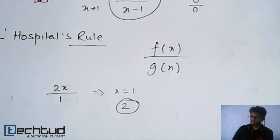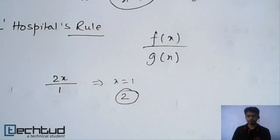I hope you all know this. So what do we do? If it is 0 by 0 form, we will differentiate both numerator and denominator. And we will keep on differentiating until we get a form which is not indeterminate.